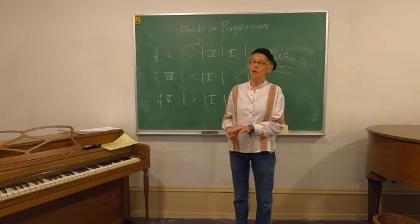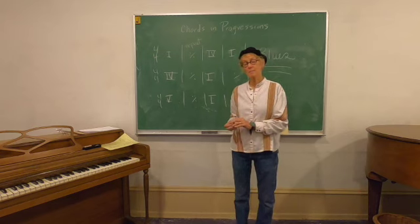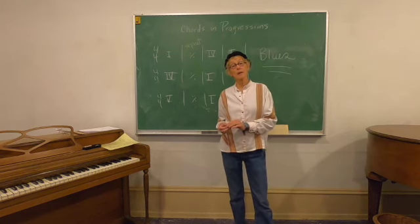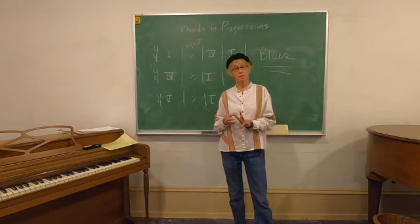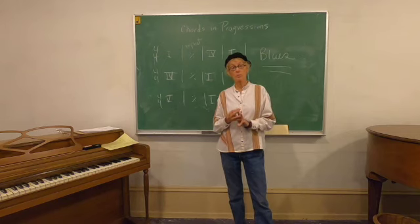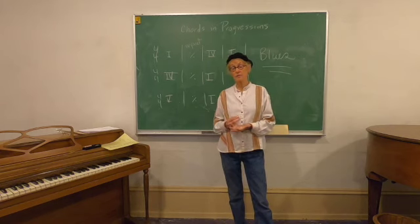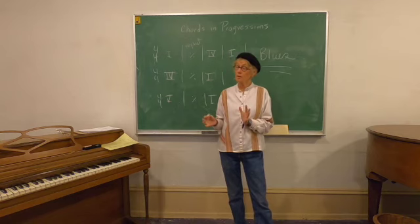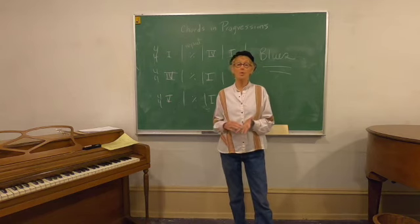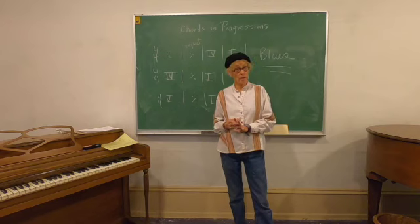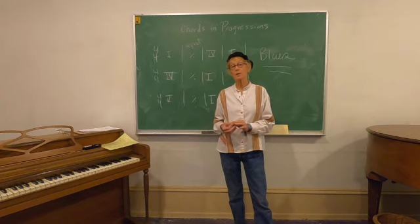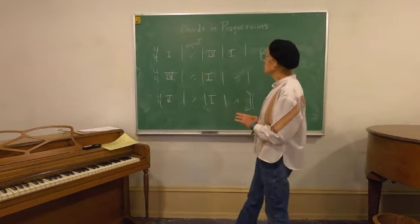In major keys as well as minor, every key has three major chords, three minor chords, and one diminished chord. In both major and minor, the first chord is called tonic, the fourth chord is called subdominant, and the fifth chord is called dominant. That's what we're going to focus on today.